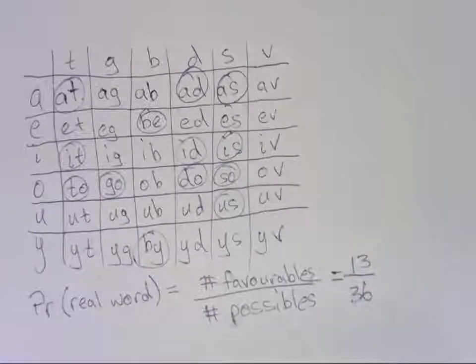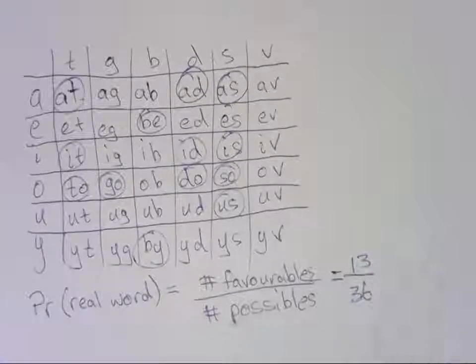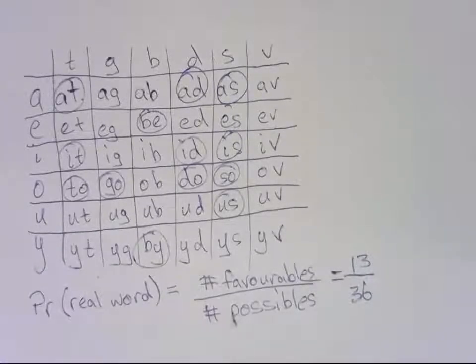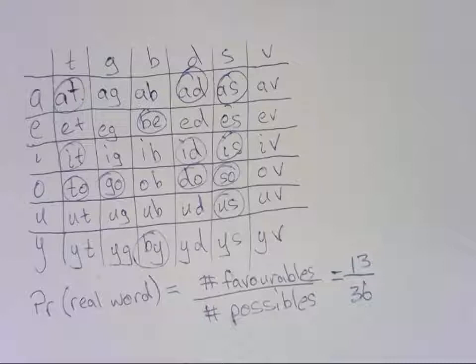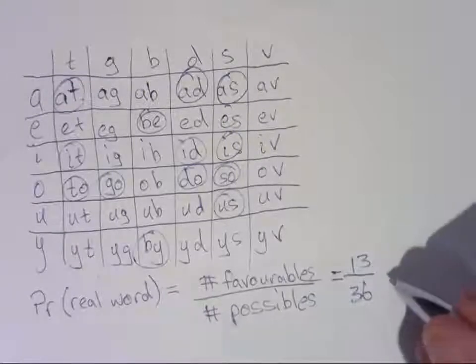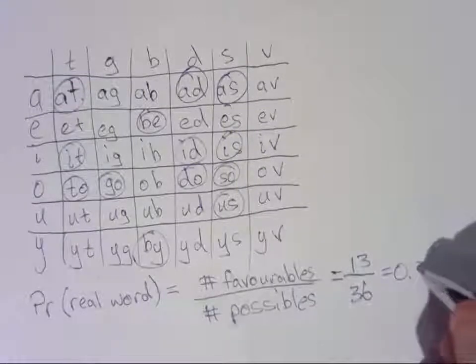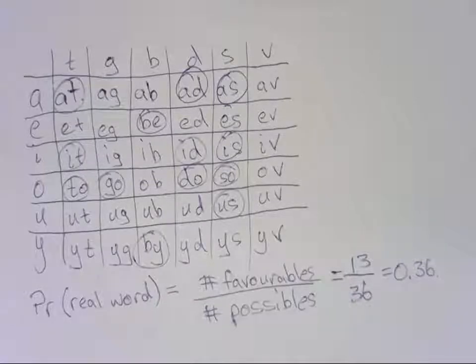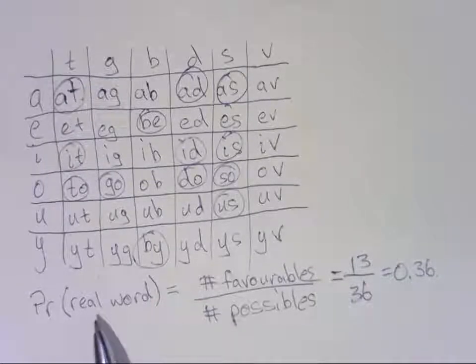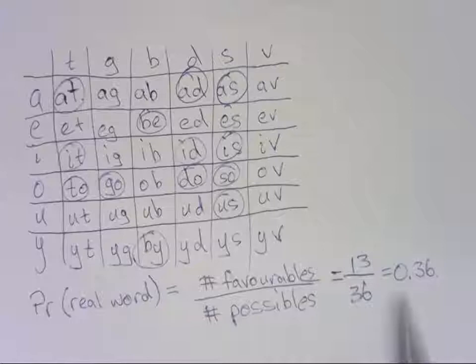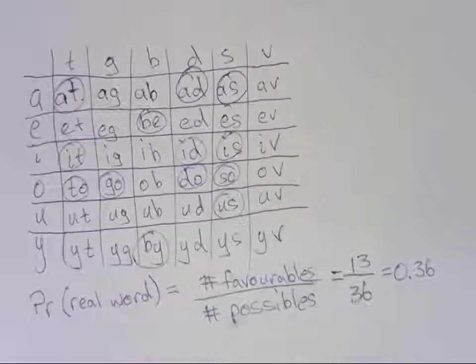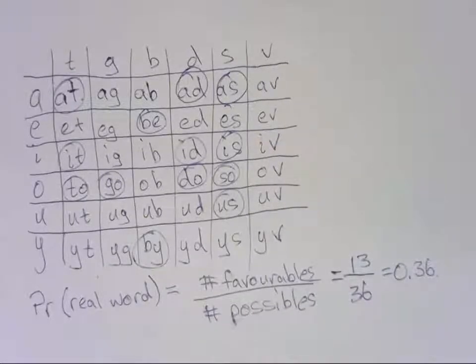So we can slot that in. So our formula is really coming together now. 13 on 36 is our probability. And if you like, you can, of course, calculate that on your calculator. And figure it out as being about 0.36 or 36%. So I'm going to leave that as the probability of getting a real word based on our two dice is about 0.36. Or if you like, 36%.